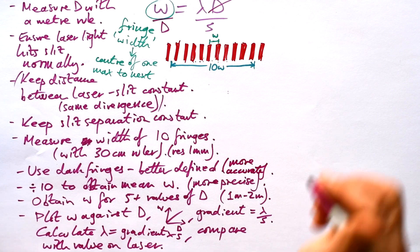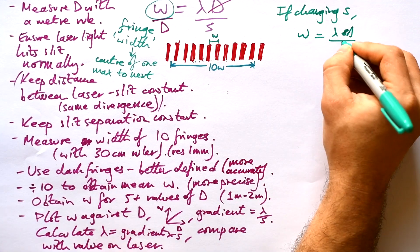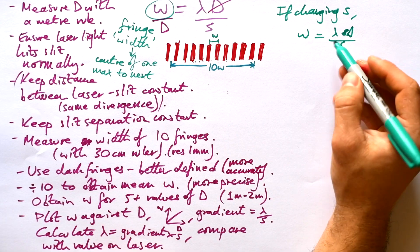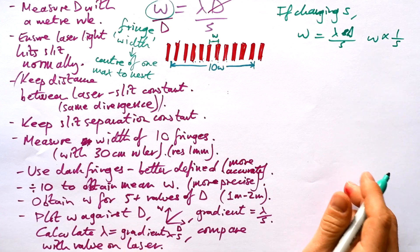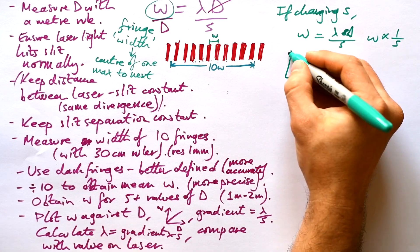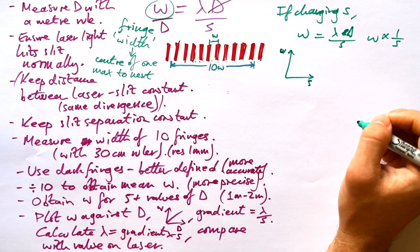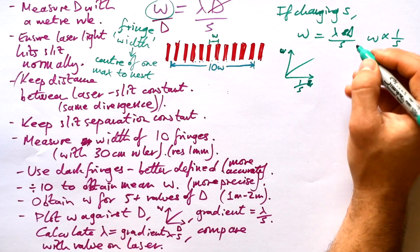If you're not changing D and you're changing S instead. Then our equation changes a little bit. So because we have W equals Lambda D over S we can see that W is inversely proportional to S. So that means that we cannot draw a graph of W against S and get a straight line. Instead we have to do one over S and that gives us a straight line.